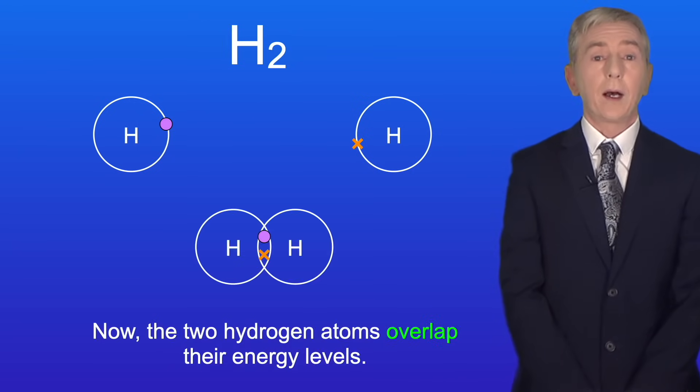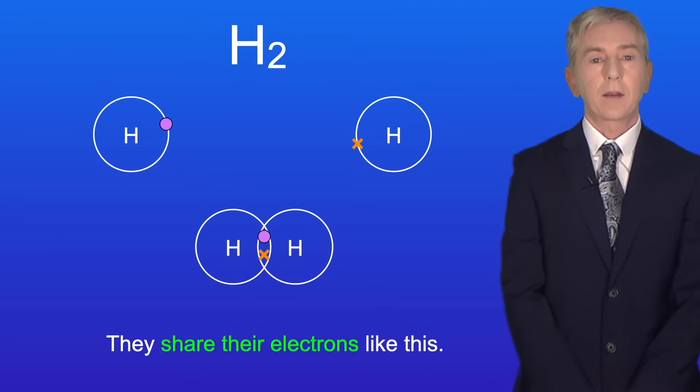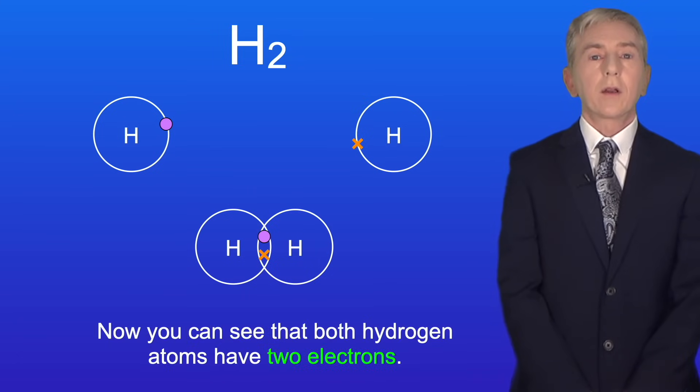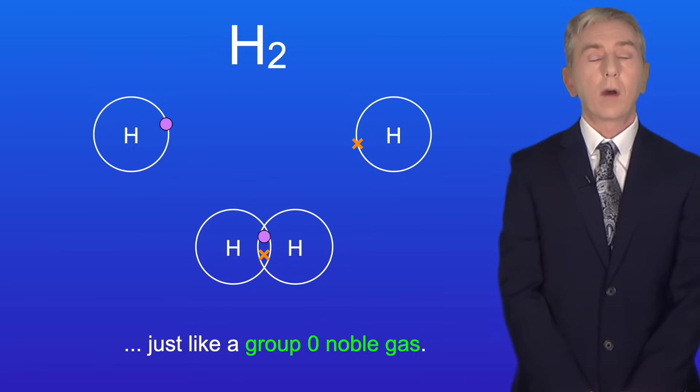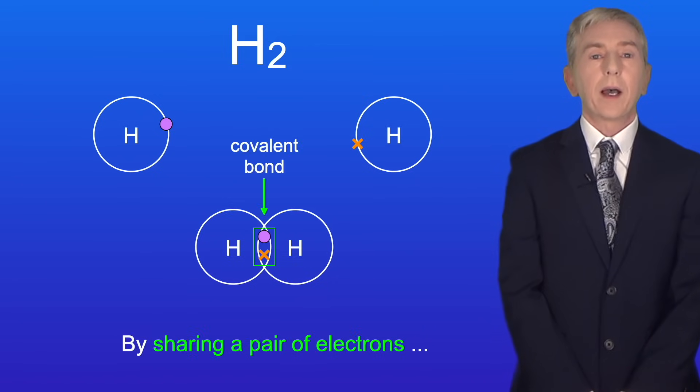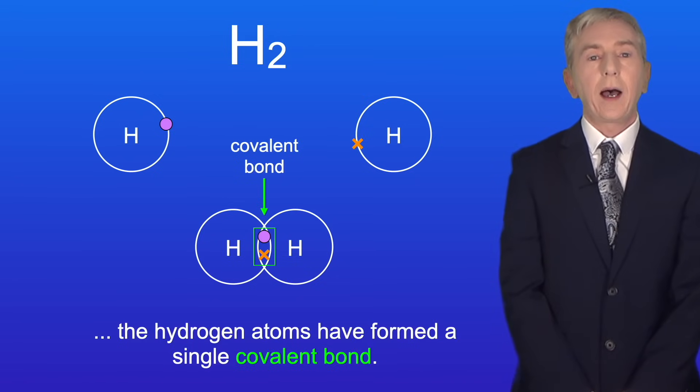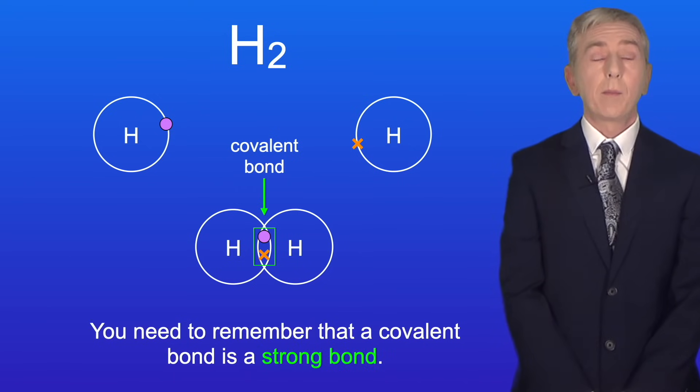So now the two hydrogen atoms overlap their energy levels and they share their electrons like this. Now you can see that both hydrogen atoms have two electrons. In other words both atoms have achieved a full outer energy level just like a group 0 noble gas. By sharing a pair of electrons the hydrogen atoms have formed a single covalent bond. And you need to remember that a covalent bond is a strong bond.